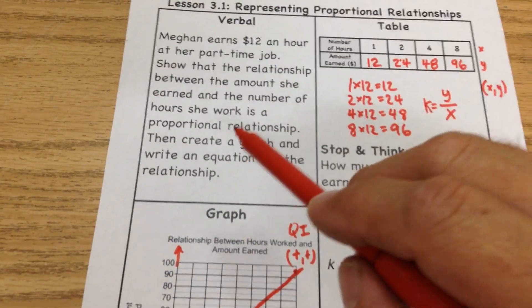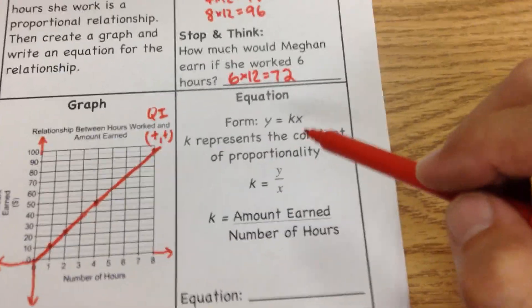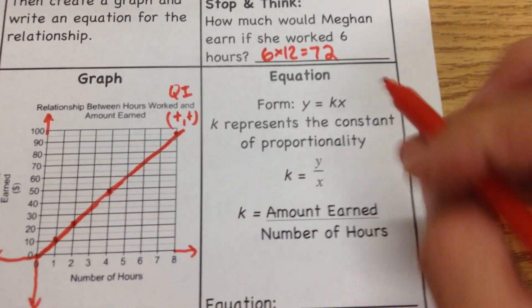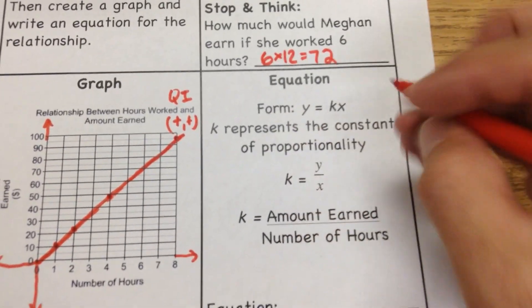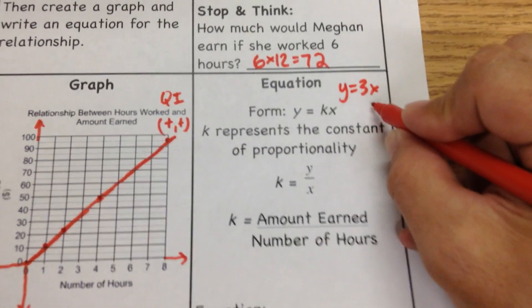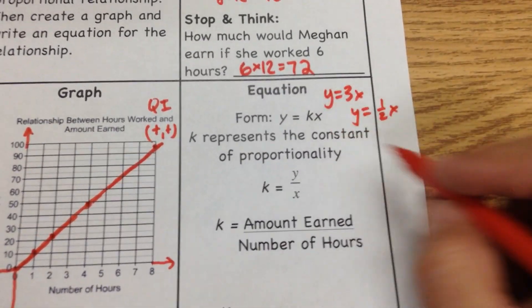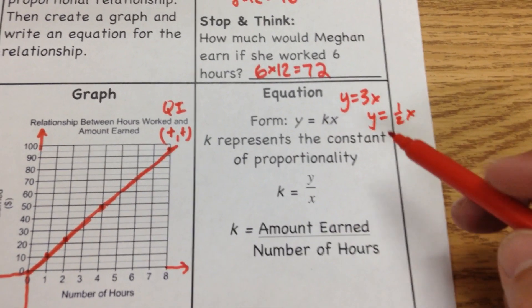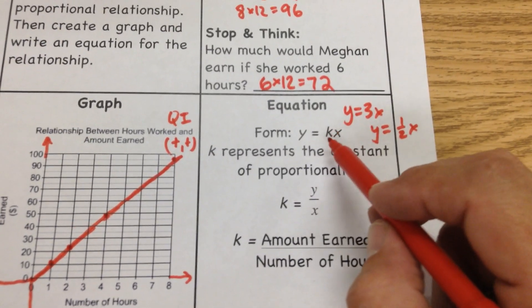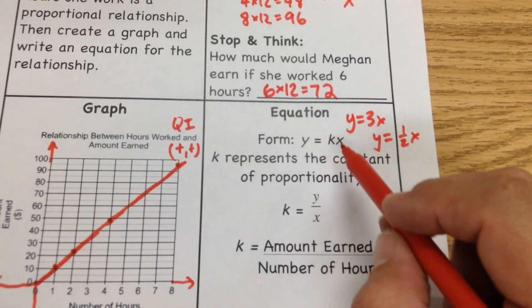So we did in words, we did a table, we then did a graph. And now we're going to do this as the equation. Now, this equation written this specific way, it looks like this normally: y = kx. And this doesn't look that different from things you've seen before. You've seen things like y equals 3x, you've seen things like y equals 1/2 x. But we're talking about a proportional relationship. This number right here is not going to change. That's going to stay the same. We're going to change the x and it's going to give us answers for y.